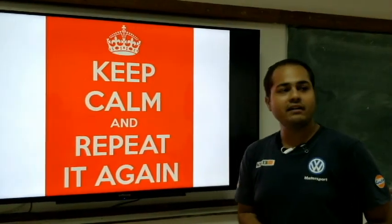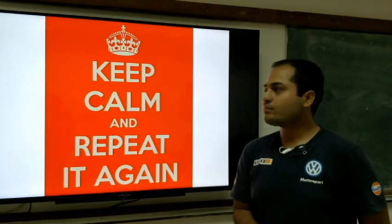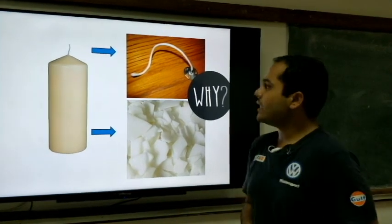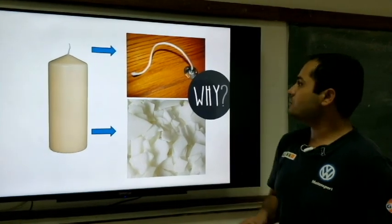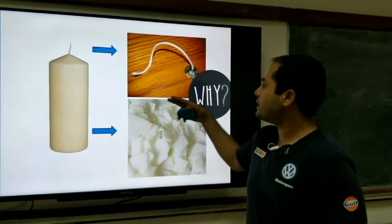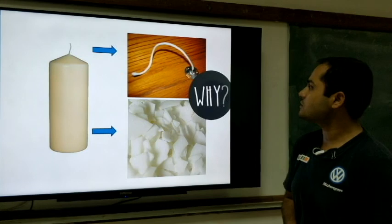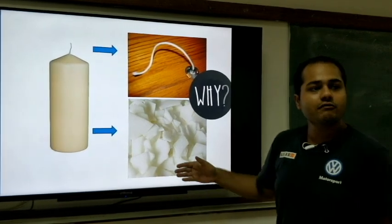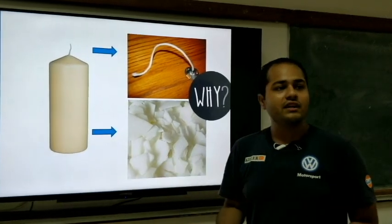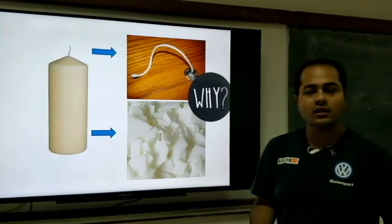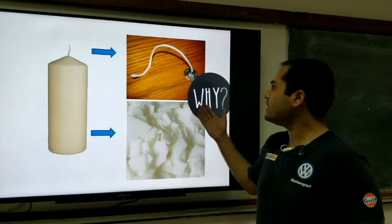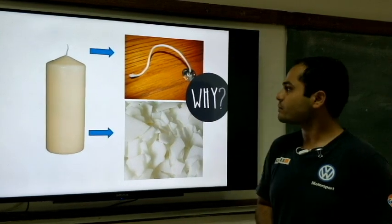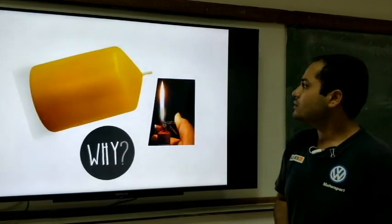We will repeat it again and try to see. If we look closely at this candle, the candle is made up of two things — one is this wick and second is this wax. The first question we can surely ask is: what is this wick doing over there?